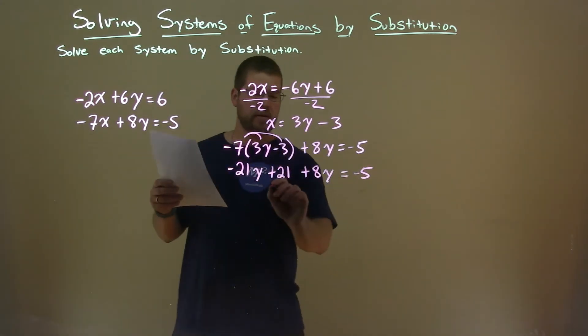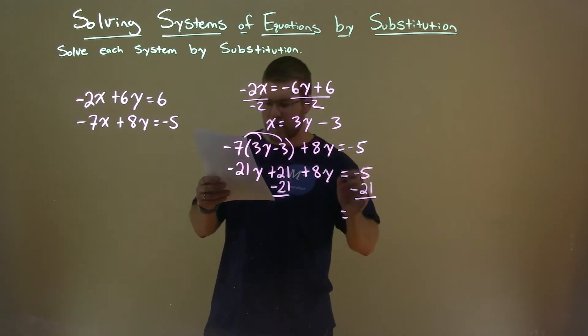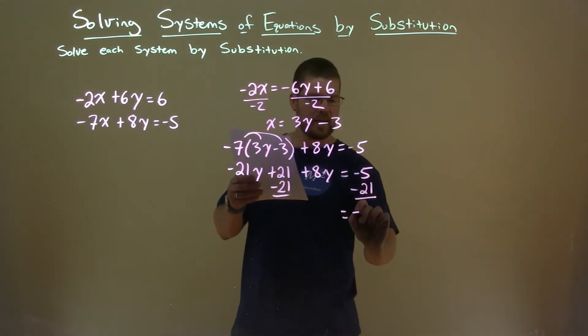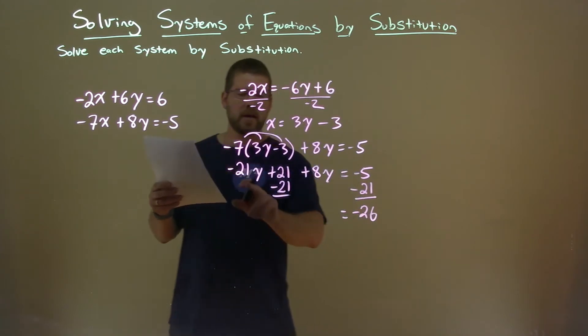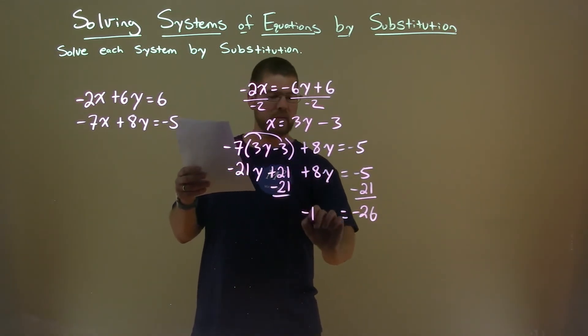Let's bring our like terms together. Subtract 21 to both sides. Negative 5 minus 21 is negative 26. Combining the y values, negative 21y plus 8y is negative 13y.